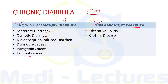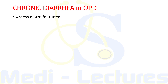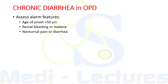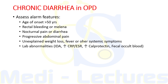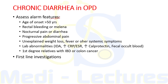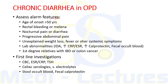Chronic diarrhea should be referred to a gastroenterologist, but before referring we can assess alarm features and send first-line investigations. Alarm features for cancer screening include: onset after age 50, rectal bleeding or melena, nocturnal pain or diarrhea, progressive abdominal pain, unexplained weight loss, fever or systemic symptoms, lab abnormalities such as iron deficiency anemia, elevated CRP/ESR, elevated fecal calprotectin, or occult blood, and first-degree relatives with IBD or colon cancer. First-line investigations include CBC, ESR, CRP, TSH, celiac serologies, serum electrolytes, stool occult blood, and fecal calprotectin.